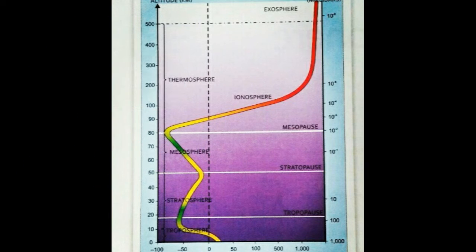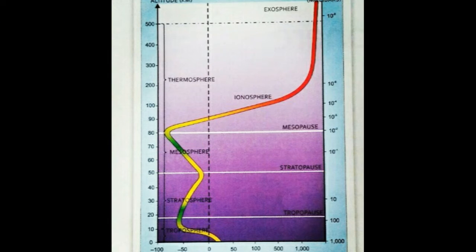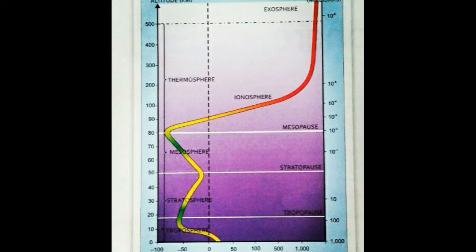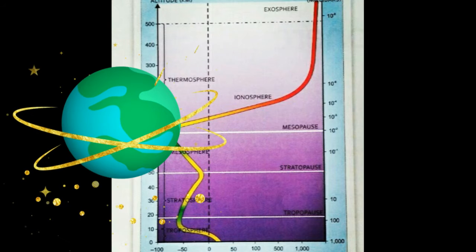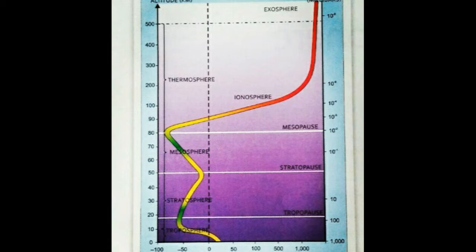The stratosphere lies above the troposphere and extends to a height of about 50 km from mean sea level. This layer is almost free from all types of weather phenomena and the movement of air is generally horizontal. Jet planes fly in this layer. The lower part of the stratosphere has a concentration of ozone, which protects us from the harmful ultraviolet rays of the sun.